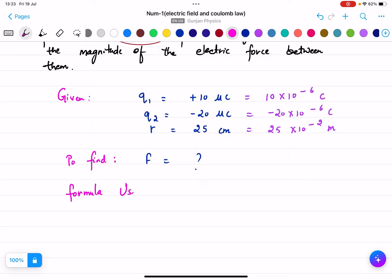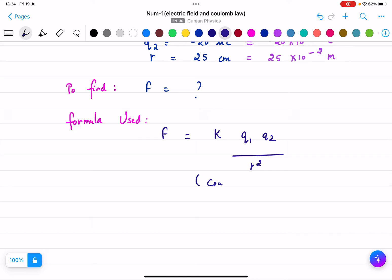I'll write the formula used. What is the formula used? It will be F = k q₁ q₂ / r². This is Coulomb's law.